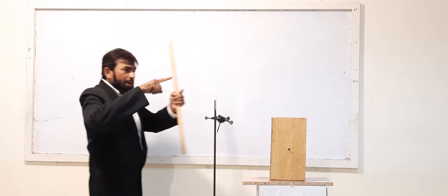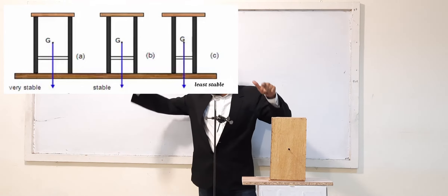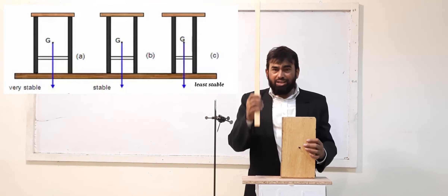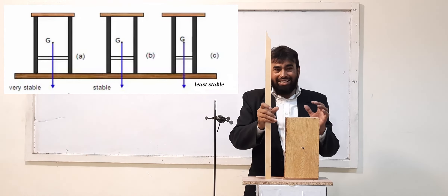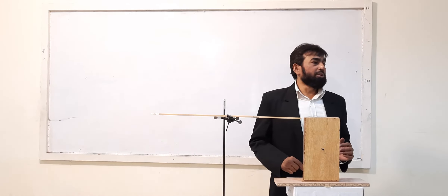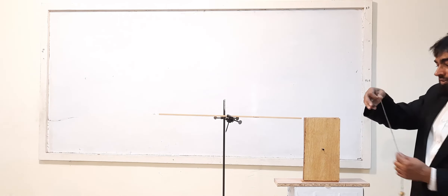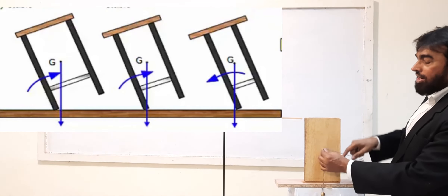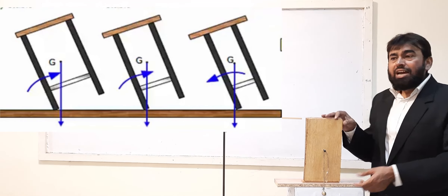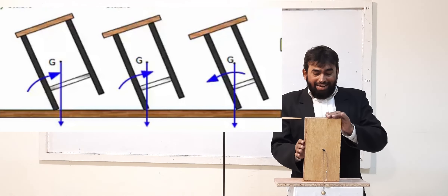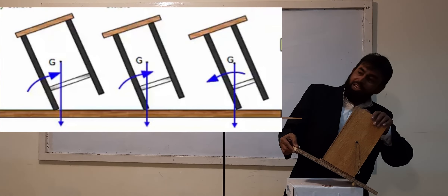The second factor is the base area. Wider the base, more will be the stability. A glass has a very narrow base while a mug has a wider base, making it very difficult to balance the glass. The body will remain stable until the line of action of gravity remains within the base. The moment it comes outside the base, it topples over. When the line of action of weight comes out of the base, the object will topple over.